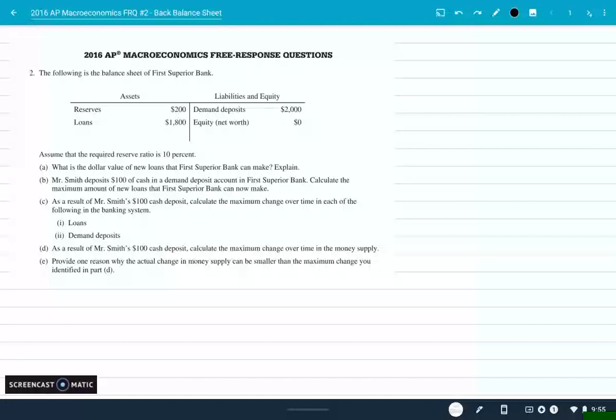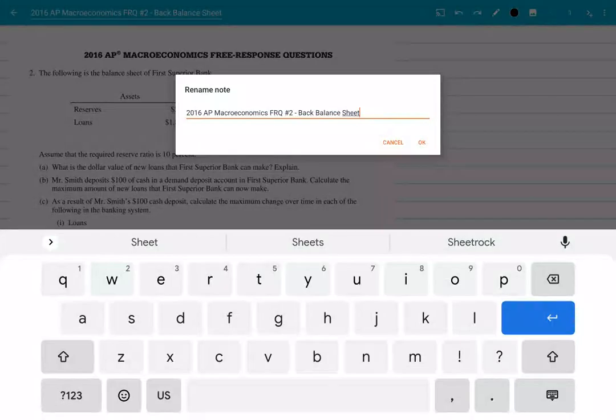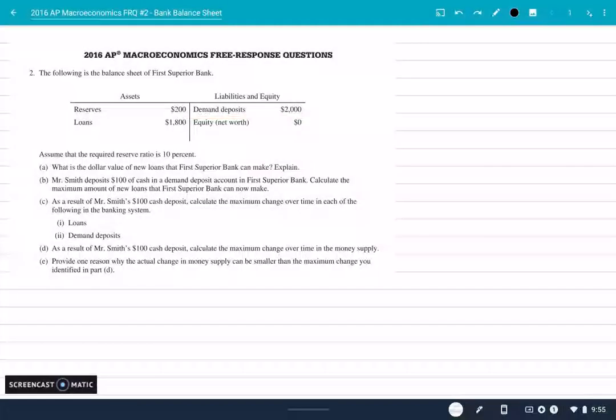Hey, welcome. This is the 2016 AP Macroeconomics free response question number two. I typed that wrong - it's supposed to say bank balance sheet. There it's fixed. I'm gonna run through this. Actually ran through this in class the other day, but this is a good question, good example of monetary policy with the Fed.